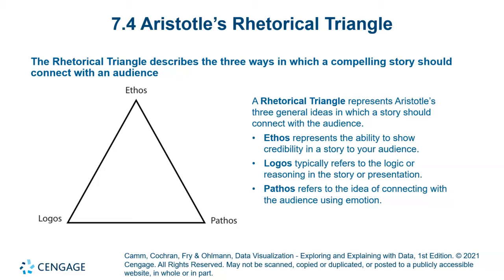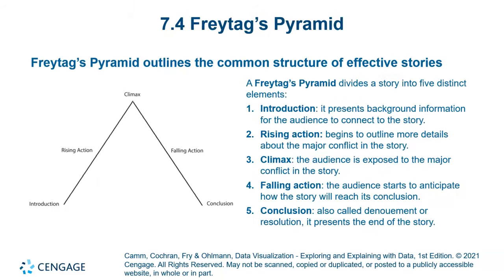Aristotle's rhetorical triangle contains three important elements. First is ethos, which relates to the credibility of the story. Second is logos, which relates to the logic of the story. Third is pathos, which relates to the feelings or emotions of the audience. These three elements are very important to make a story successful.